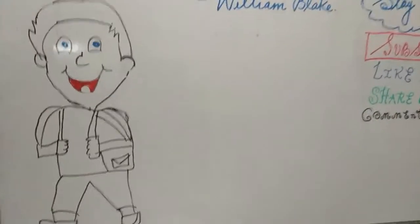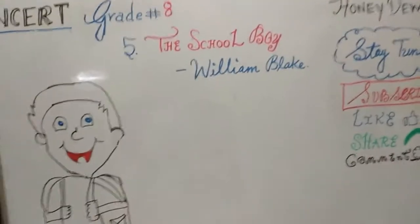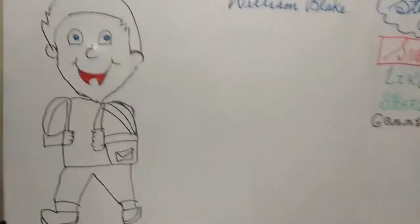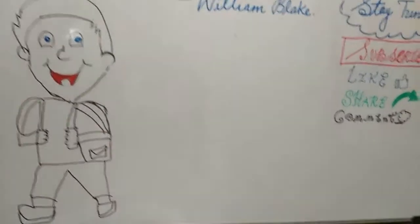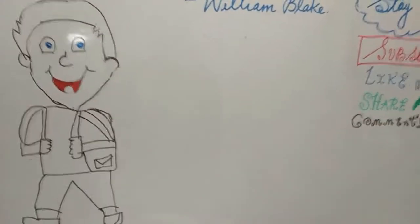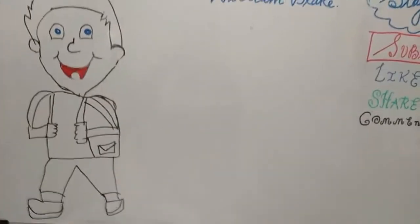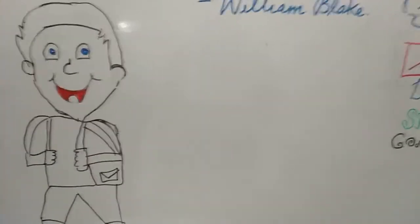There are five stanzas in this poem. In the first stanza, this boy loves to rise up early in the morning and sing like a bird on every tree. The distant huntsman winds his horn and the skylark sings with him. He says there are a lot of mild sounds in the morning, and he compares himself to a bird which sings very happily on each tree in the morning time.